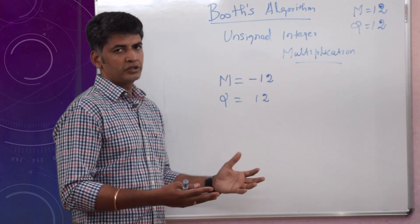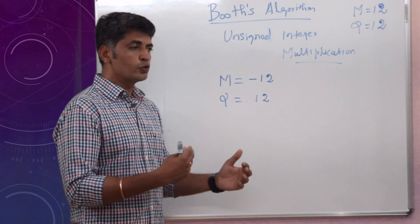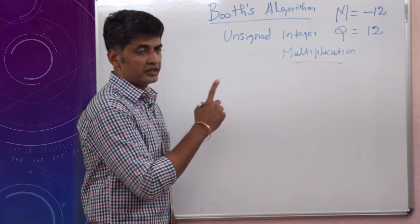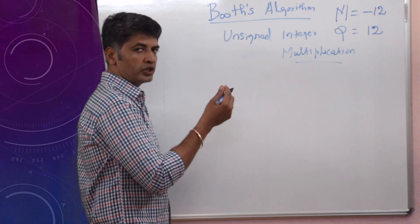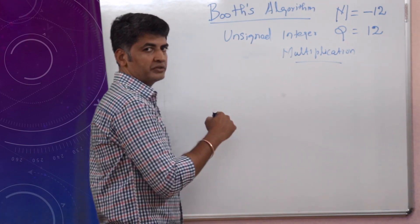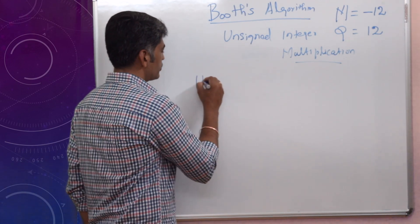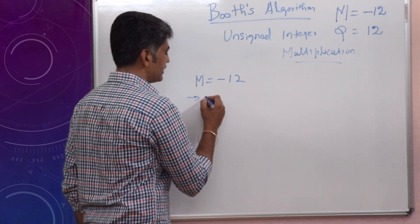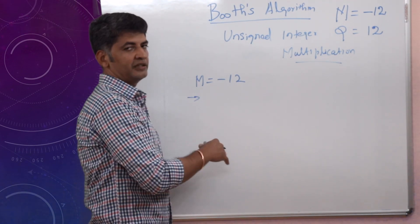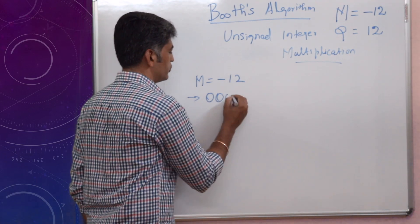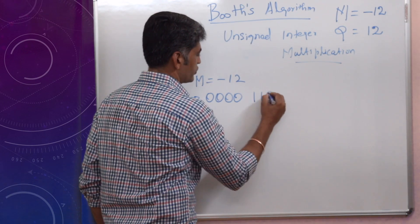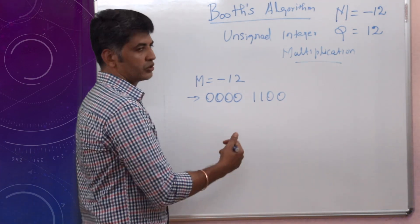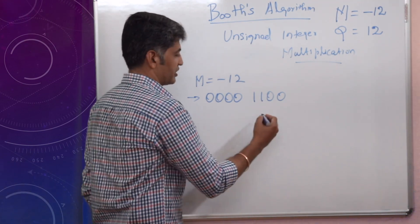As discussed in the previous video, for addition you need regular binary addition, but for subtraction you need the two's complement representation. Since the multiplicand is a negative number, I need to convert it. So M = -12. First I write the positive value of 12 in 8-bit representation: 0 0 0 0 1 1 0 0. Now I will convert this into minus 12 using two's complement.